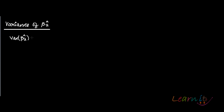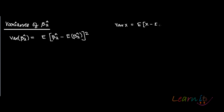In this recording, we'll be talking about how to derive the variance of beta 2 hat. Variance of beta 2 hat is equal to E of beta 2 hat minus E of beta 2 hat, whole square. This is the formula for variance of any variable — for example, variance of x is E of x minus E of x, whole square.